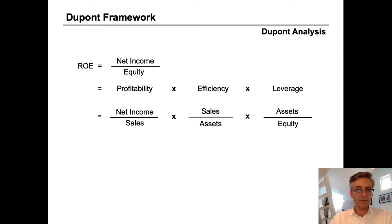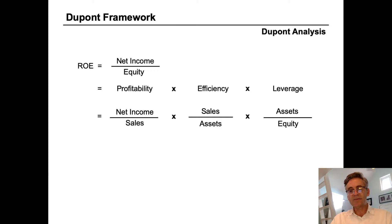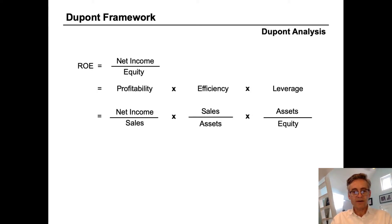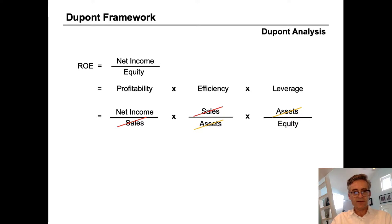The profitability measure they use is net income on sales. The efficiency measure is sales as a proportion of total assets. And the leverage metric is assets over equity. When you multiply these fractions together, you can cancel out sales and assets, and what you're left with is net income over equity — which we recognize as return on equity.